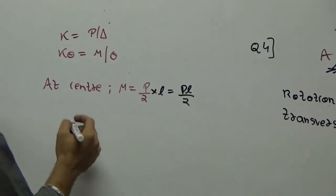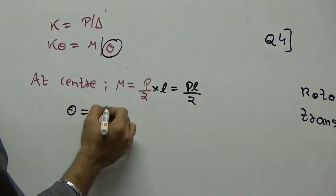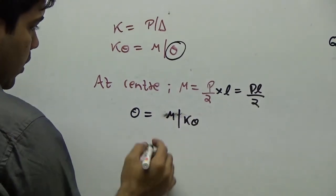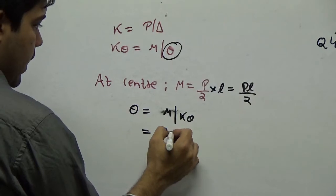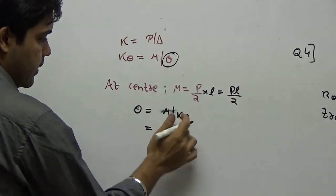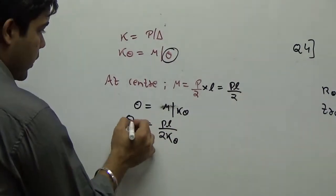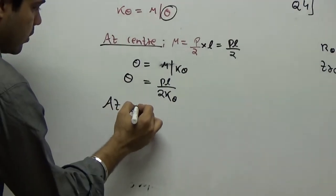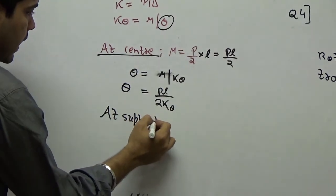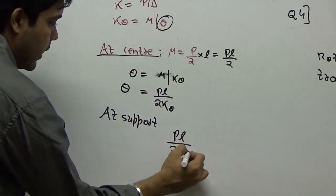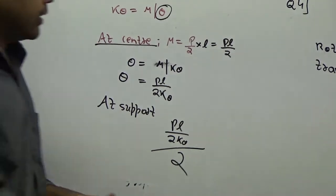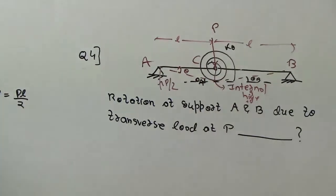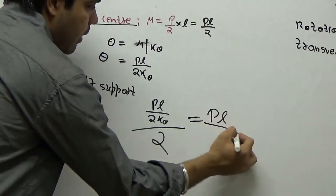From K-theta equals M by K-theta, the rotation at the center theta equals PL by 2K. At the support, theta at support equals PL over 2K divided by 2, because the support rotation is the combination of theta-B and theta-A. So the answer is PL by 4K.